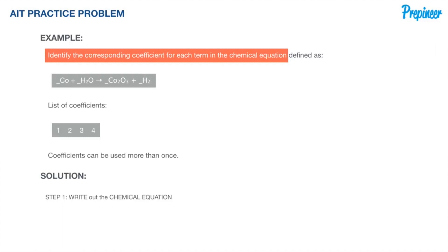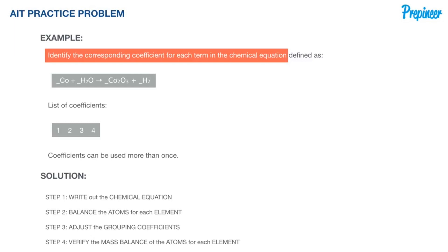This will be a four-step process. Step one: write out the chemical equation — this will most likely already be done for you, but if given a reaction in writing, we'll need to convert it to standard chemical form. Step two: balance the atoms for each element on both the reactant and product side. Step three: adjust the coefficients to ensure they are whole numbers. Step four: confirm the mass balance of the chemical equation with the coefficients we inserted.